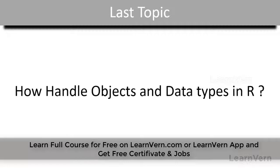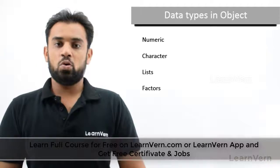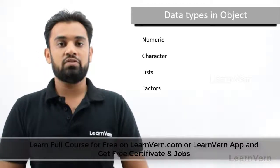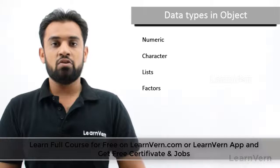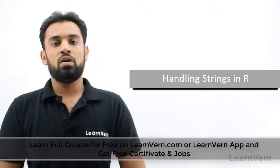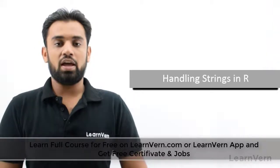Hello friends, welcome to Learn. We completed our second chapter on objects and data types in R. Today we are going to start our next chapter: handling strings in R. In the second chapter we saw data types and objects — numeric, character, lists, factors, and so forth. In this chapter we are going to concentrate on character vectors, which we call handling strings in R.